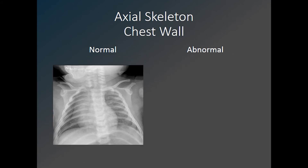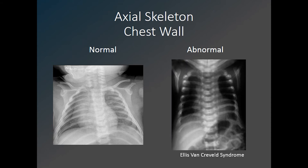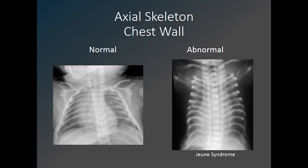Assessing the chest and ribs is also important. Here on the left is a normal chest x-ray in a four-month-old. Some skeletal dysplasias result in a narrow chest and shortened ribs, as in this patient with Ellis-Van Creveld syndrome, also known as chondroectodermal dysplasia. You can see the difference in the width of the chest and the length of the ribs. And here is a patient with Jeune syndrome, who has an extremely narrow chest and short ribs, also known as asphyxiating thoracic dysplasia.